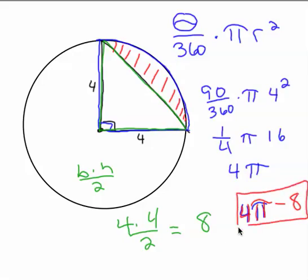And so that's the exact answer. If you wanted an approximation, you just type it in and use your pi key, use 3.14. So 4, using the pi key, minus 8, it's 12.57 approximately minus 8, which is approximately 4.57.